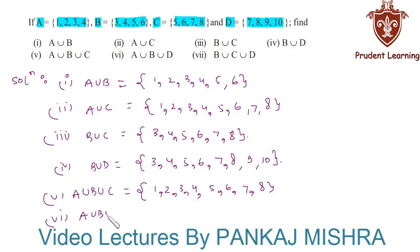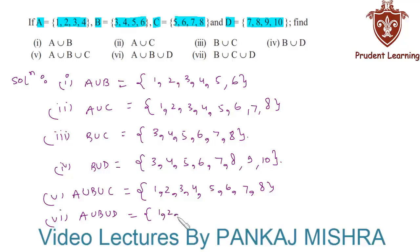Next we need to find A union B union D. Again, this means the set of all the elements that are present either in A or in B or in D. So this is equal to {1, 2, 3, 4, 5, 6, 7, 8, 9, 10}.